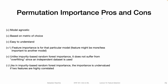Time to wrap it up. Here are some pros and cons of permutation importance. One nice thing is that it is model agnostic — you can use it with any classifier, whether it's a random forest, logistic regression, or a deep learning model. Similarly, it works with any type of metric computed on the validation or test set: accuracy, F1 score, Matthew's correlation coefficient, R squared, and so on.